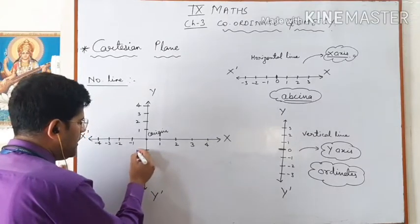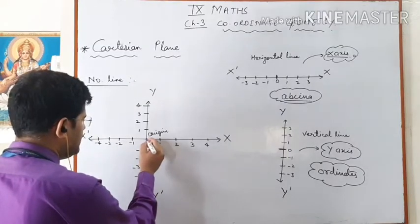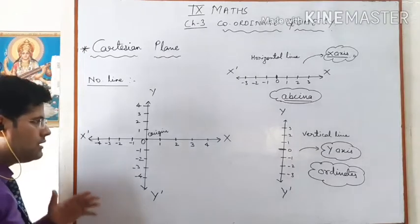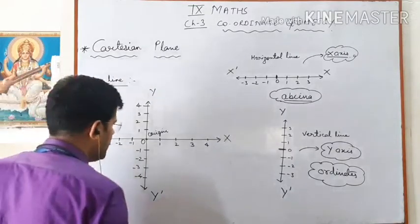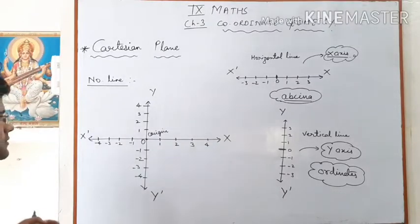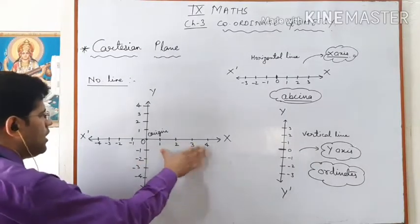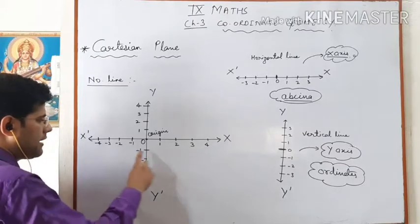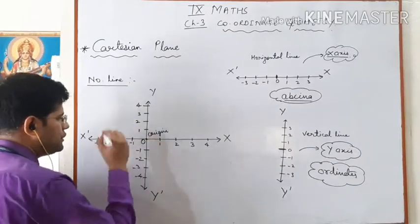If we name this intersection as O, we have four directions. The first is OX, the second is OX', the third is OY, and the fourth is OY'. OX and OY are the positive parts, while OX' and OY' are the negative parts. These axes are separated by the point known as the origin.